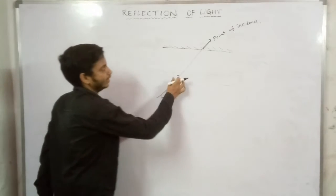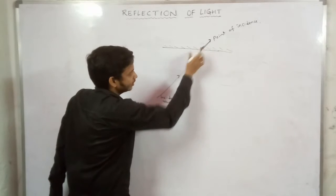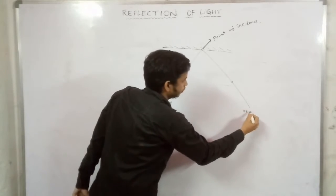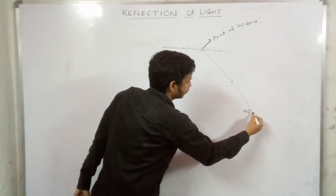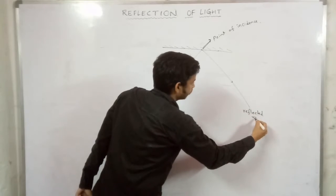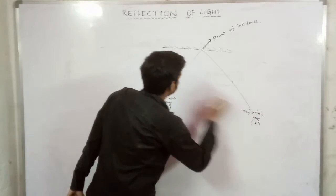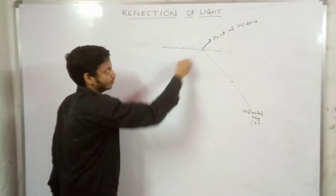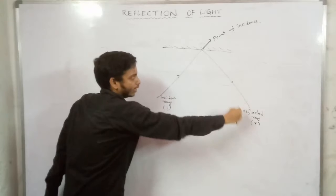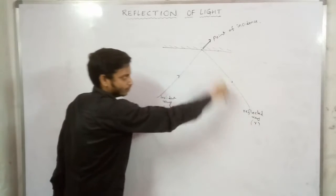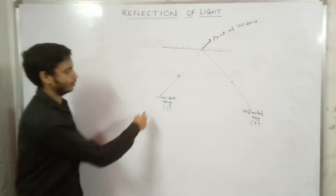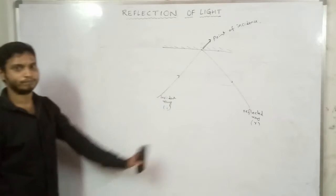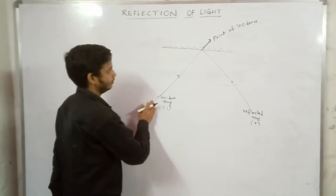After the point of incidence, the ray that bounces back is known as the reflected ray. The perpendicular drawn to the surface through the point of incidence is called the normal.